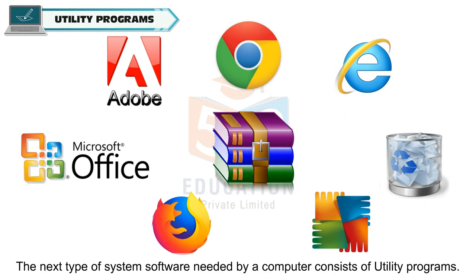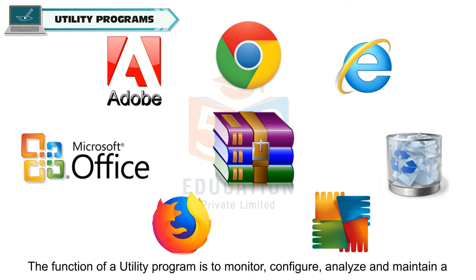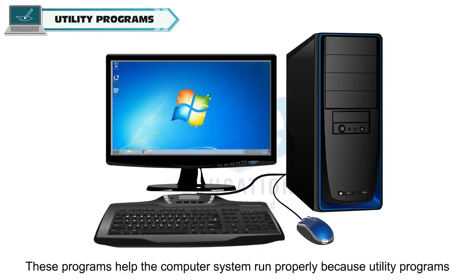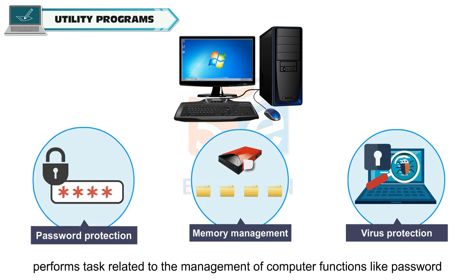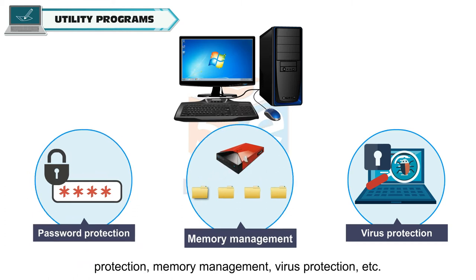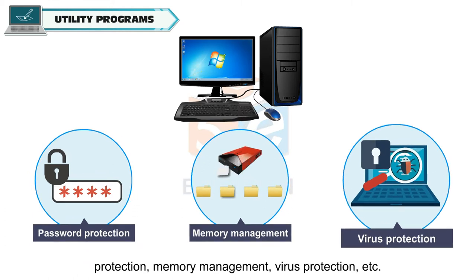The next type of system software needed by a computer consists of utility programs. The function of a utility program is to monitor, configure, analyze and maintain a computer system. These programs help the computer system run properly because utility programs perform tasks related to the management of computer functions like password protection, memory management, virus protection, etc.